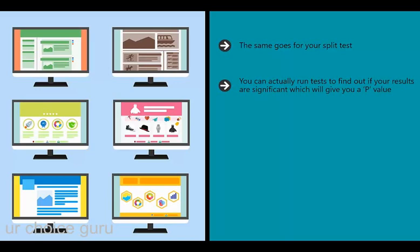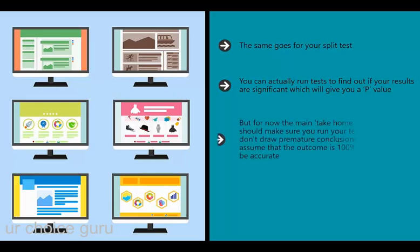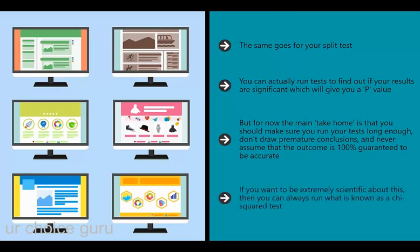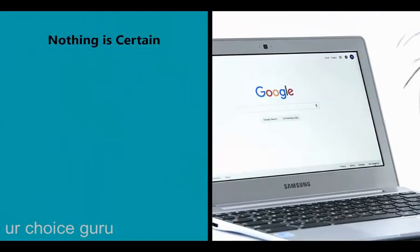Statistical significance refers to running a test long enough that results become increasingly likely to be accurate. You can actually run tests to find out if your results are significant, which will give you a p-value - the percentage likelihood that the outcome was a fluke. Anything less than 5% (p greater than 0.05) is considered significant. You should also consider running a chi-squared test, which takes your numbers, crunches them, and provides a p-value. You can use the number of impressions on each page or the page ranking over a given amount of time to do this.